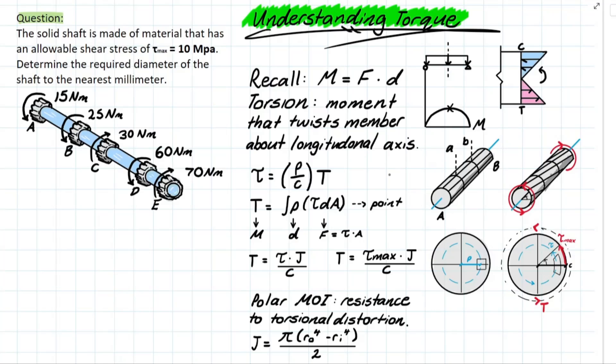If we looked at what torsion means for a member, it's going to be something very similar. The only difference is now, torsion is a force that acts about a longitudinal member's axis, meaning that we are rotating around that line that goes from one end to the other. In summary, torsion is a moment that twists the member about the longitudinal axis.